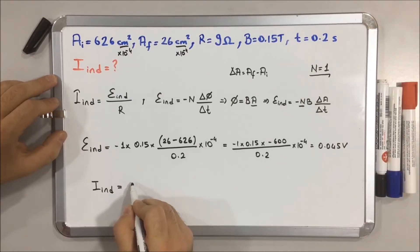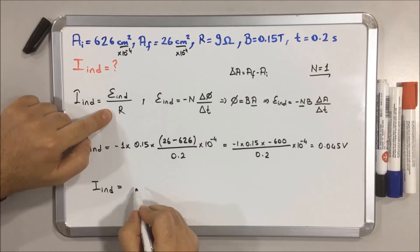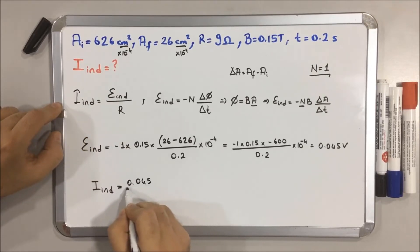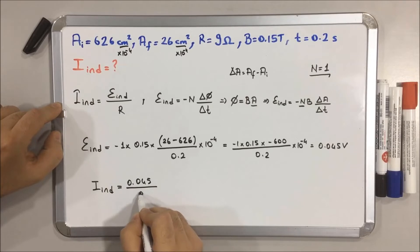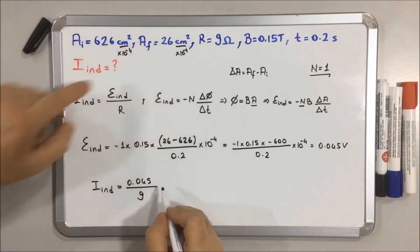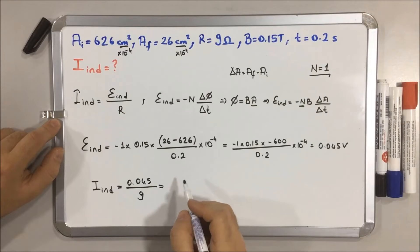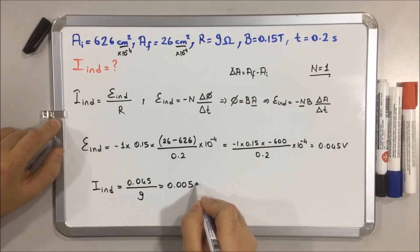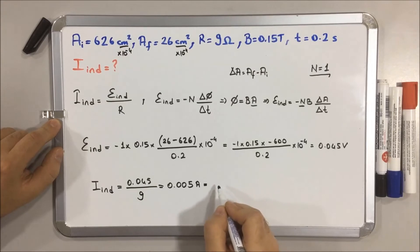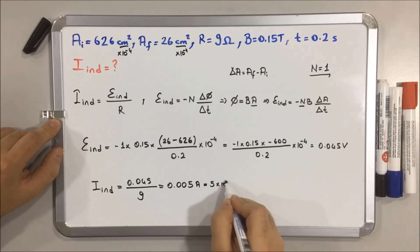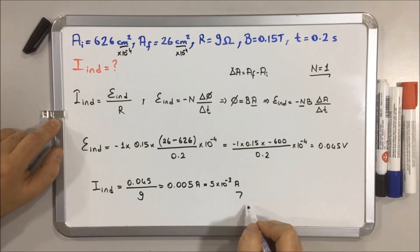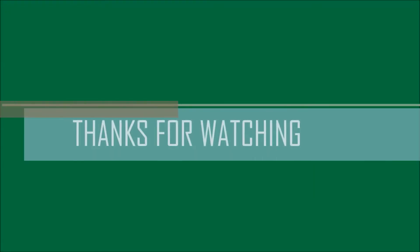Induced current equals EMF induced over R, so it will be 0.045 over 9 — R is 9, given in the question. The result will be 0.005 amperes, or 5 times 10 to the minus 3 amperes. Thanks for listening.